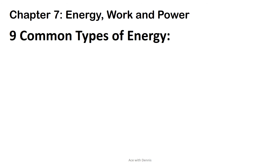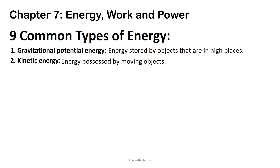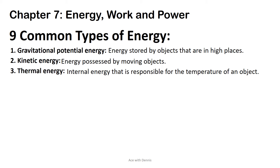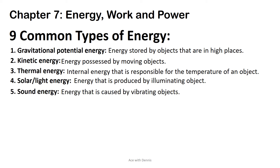9 Common Types of Energy. 1. Gravitational Potential Energy: energy stored by objects that are in high places. 2. Kinetic Energy: energy possessed by moving objects. 3. Thermal Energy: internal energy that is responsible for the temperature of an object. 4. Solar or Light Energy: energy that is produced by an illuminating object. 5. Sound Energy: energy that is caused by vibrating objects.